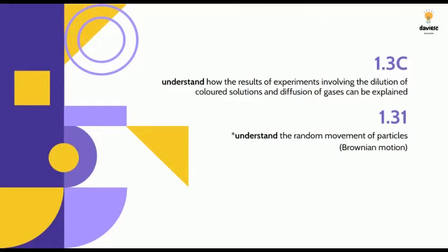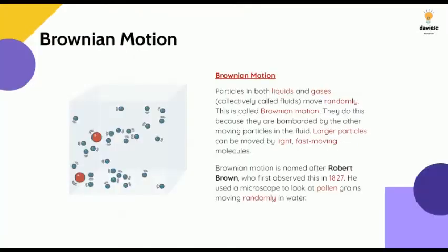Brownian motion relates to diffusion. It is the movement of particles in liquids and gases — the idea that they move randomly. If we have larger particles, they can be moved by light, fast-moving molecules.